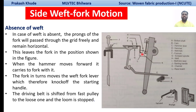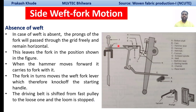In the absence of weft, the front of the fork will push freely inside the grid. The grid is mounted in front of the fork on the race board or slay. This leaves the fork in a lowered position. When the hammer moves forward, it carries the fork with it, and the fork in turn moves the weft fork lever, which knocks off the starting handle, ultimately shifting the driving belt from the fast pulley to the loose pulley.